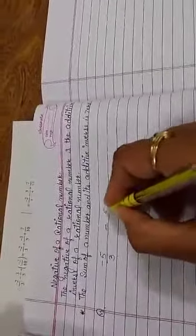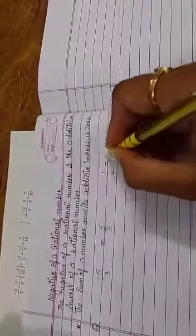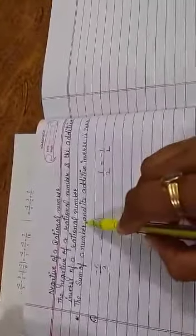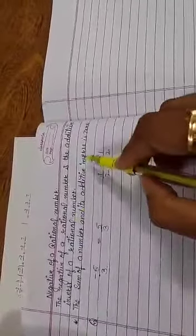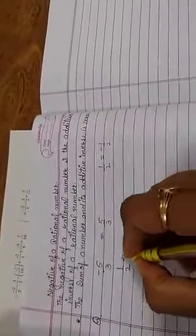Negative of minus 5 upon 3 is 5 upon 3. Negative of 1 upon 2 is minus 1 upon 2. The sum of a number and its additive inverse is 0. When we add a number by its additive inverse, we always get 0.